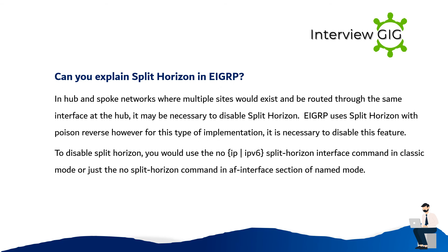Can you explain split horizon in EIGRP? In hub-and-spoke networks where multiple sites exist and are routed through the same interface at the hub, it may be necessary to disable split horizon. EIGRP uses split horizon with poison reverse; however, for this type of implementation it is necessary to disable this feature. To disable split horizon, use the no split-horizon interface command in classic mode, or just the no split-horizon command in the AF interface section of named mode.